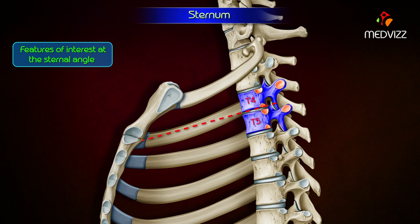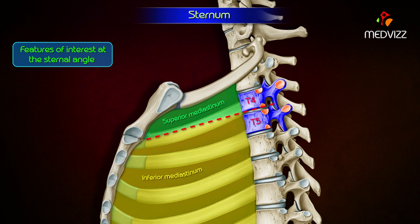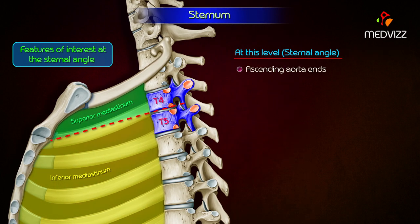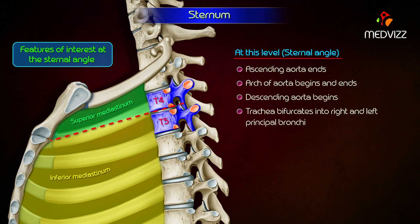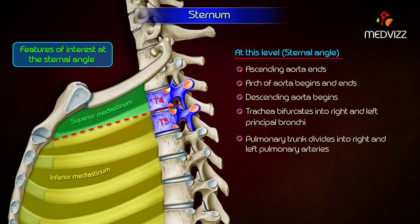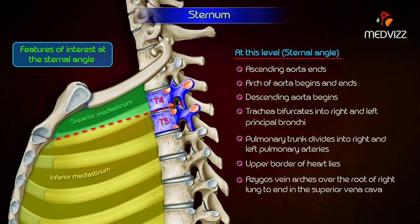A horizontal plane passing through this level separates the superior mediastinum from the inferior mediastinum. The ascending aorta ends at this level. The arch of the aorta begins and ends at this level. The descending aorta begins at this level. The trachea bifurcates into right and left principal bronchi at this level. The pulmonary trunk divides into right and left pulmonary arteries at this level. The upper border of the heart lies at this level. The azygous vein arches over the root of the right lung to end in the superior vena cava.